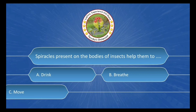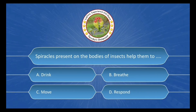Spiracles present on the bodies of insects help them to ___. The options are: A. Drink, B. Breathe, C. Move, D. Respond. The correct answer is Option B: Breathe.